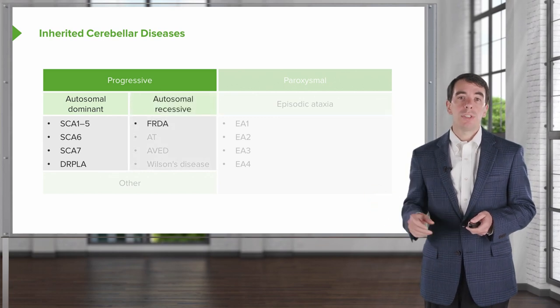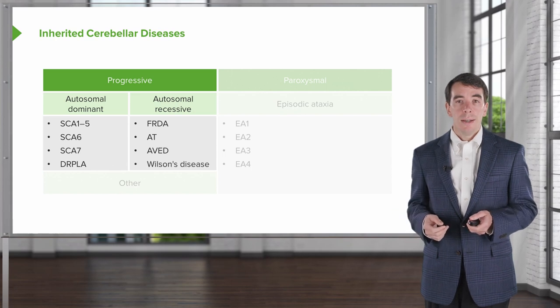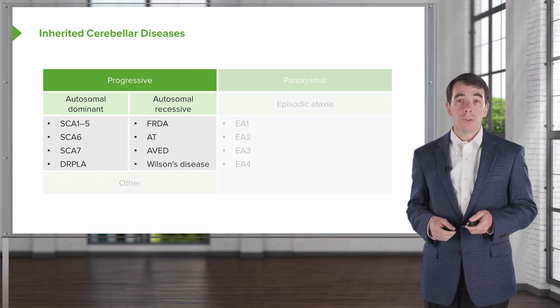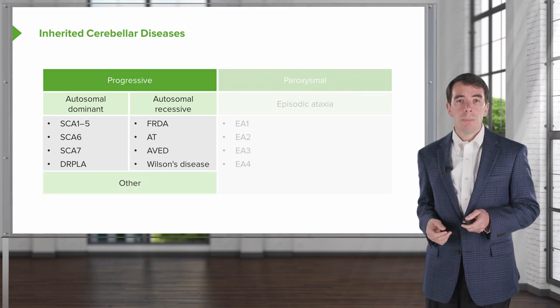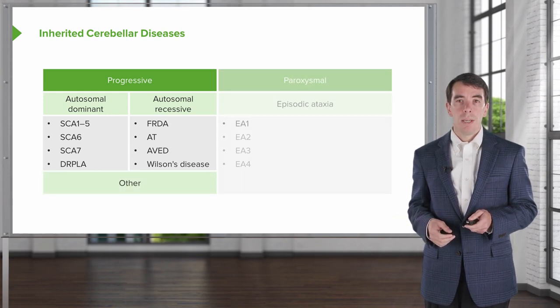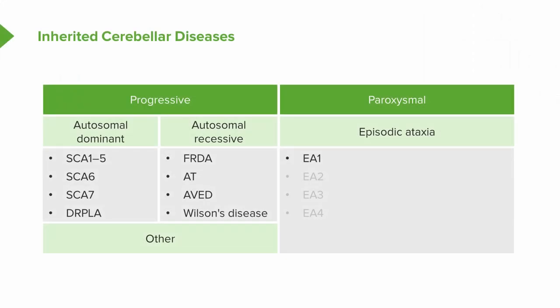The autosomal recessive cerebellar conditions include Friedreich's ataxia, ataxia telangiectasia, ataxia with vitamin E deficiency, and Wilson's disease. It's important to have an organizational structure for thinking about these, as some other conditions can also cause progressive ataxia. The paroxysmal or episodic ataxias — EA1, EA2, EA3, and EA4 — are based on which cerebellar channel is dysfunctional. They present with episodes of ataxia, with patients typically normal or variably abnormal between episodes.